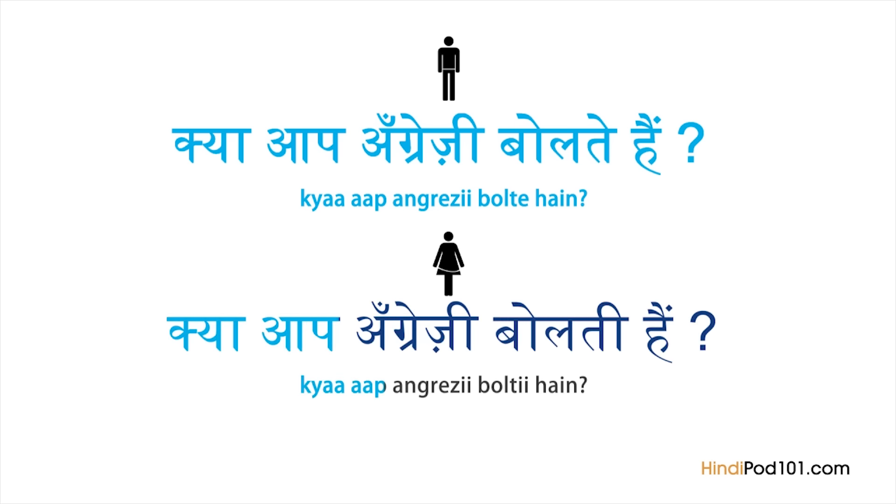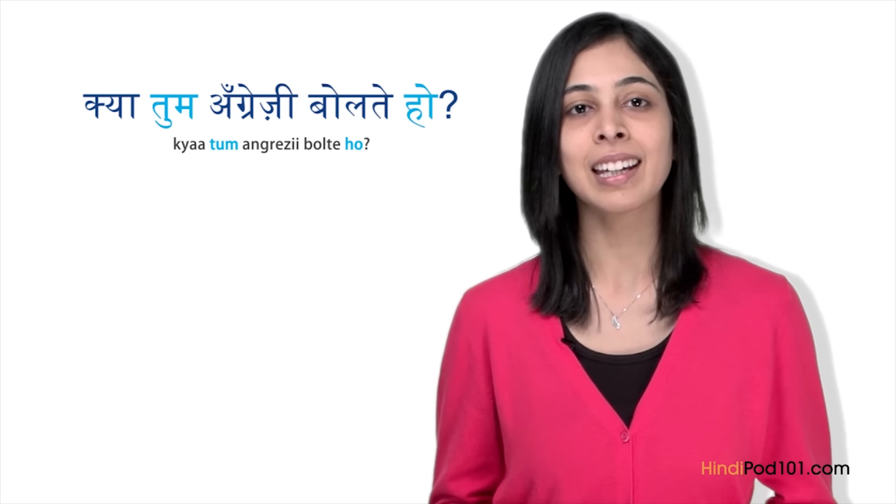Now let's make this sentence informal. We use the informal version of you, which is Tum. If we change the word for you, we also change the sentence ending particle to Ho. When speaking to younger people, it's acceptable to use the informal form. You will say Kya tum angrezi bolte ho? to ask a young man or boy, or Kya tum angrezi bolti ho? to ask a young woman or girl.